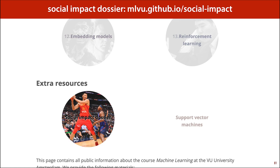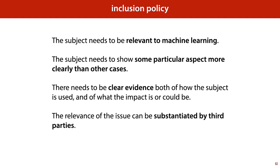If you're upset about anything we say in the social impact parts of the lecture, or you think we've made a mistake, please have a look at this resource. It contains a detailed explanation of our methods and extensive references to back up any claim that we make that might be controversial. One particularly important aspect of the social impact dossier is our inclusion policy — the rules that we follow to decide whether a particular subject is worth discussing in the course. This is what stops us from arbitrarily discussing whatever political topics we're personally most worked up about. If any particular topic seems arbitrarily chosen or its inclusion seems politically motivated, check if we follow these rules.